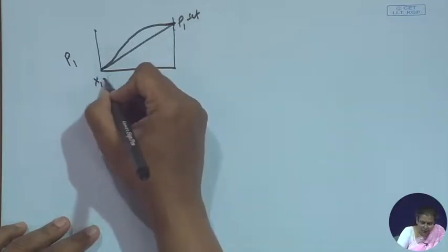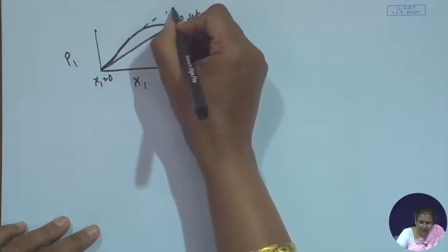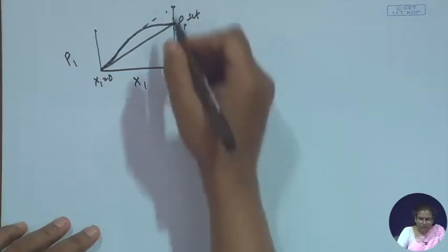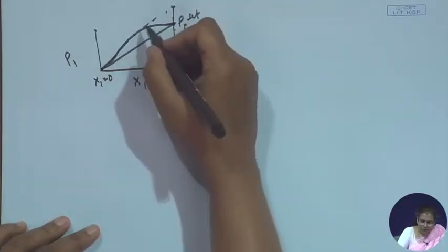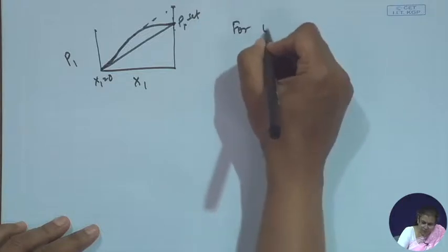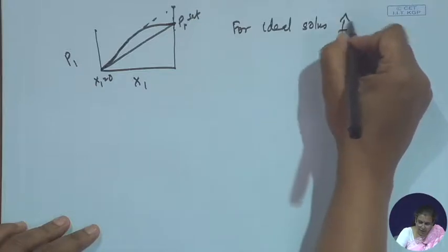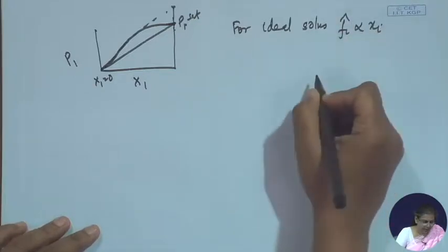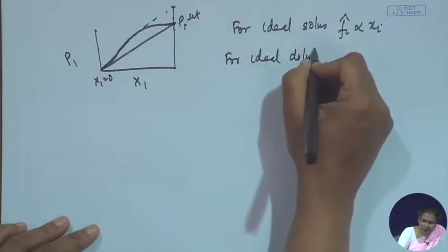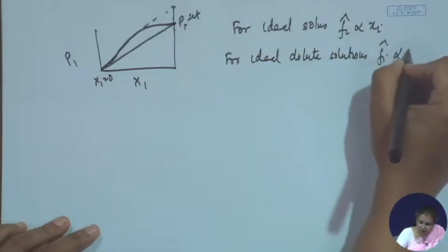We also found that at x_1 equals 0, the slope is more or less linear, but if we extend it, the intercept is not at p_1 saturated — it is at some other point. Therefore, for both cases it is linear, and we proposed that for an ideal solution, f_i bar is proportional to x_i. In the same way, for ideal dilute solutions, f_i bar is also proportional to x_i.